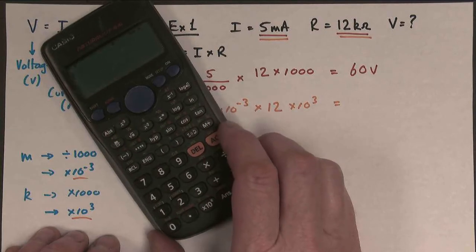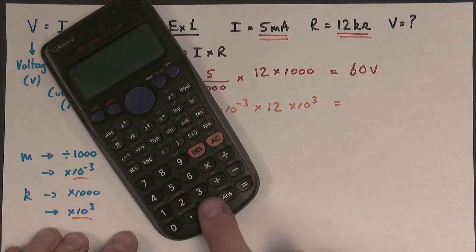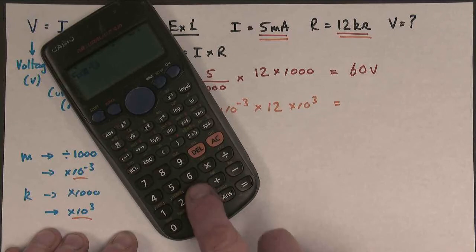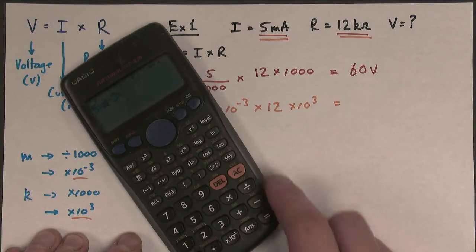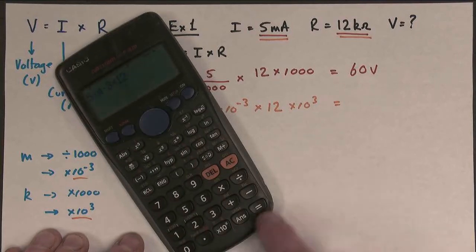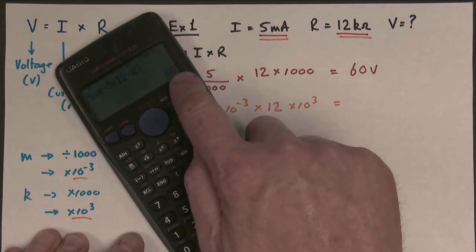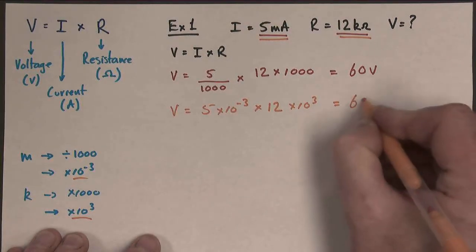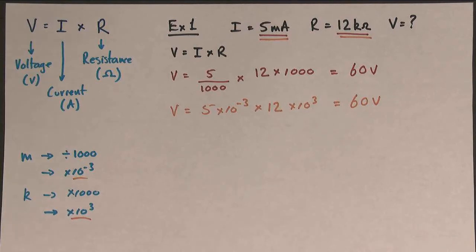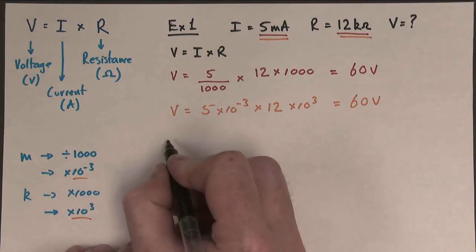So remember we had 60 last time. Let's see what we get this time. So we'll clear it. And we do 5, and it's this button here, times 10 to the minus 3, multiplied by 12 times 10 to the 3, equals, and there's our answer, 60 volts, which is fantastic. So whether we use just simply dividing and multiplying, or whether we use standard form, we end up with the same answer.